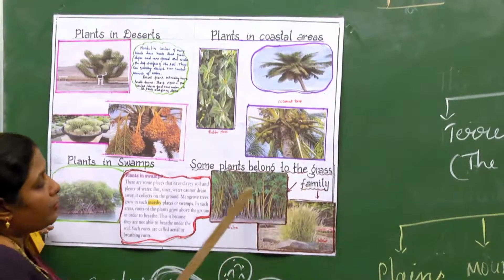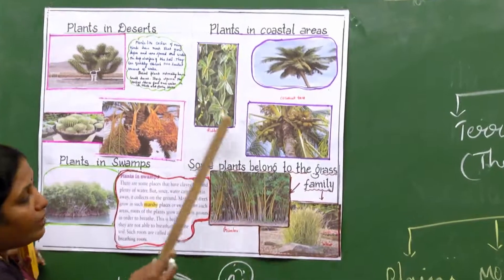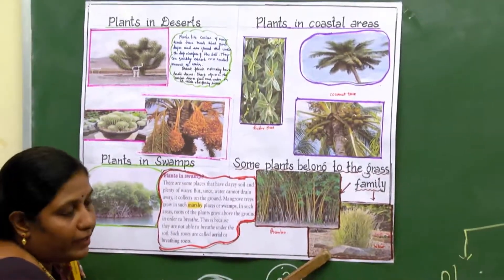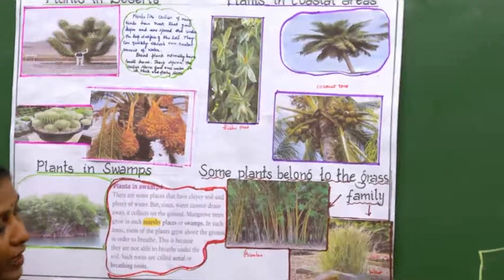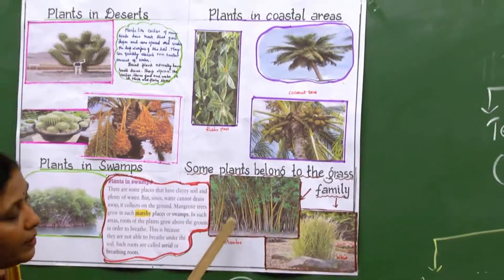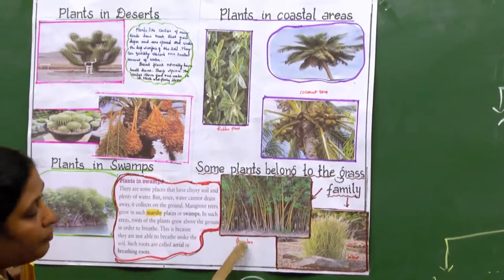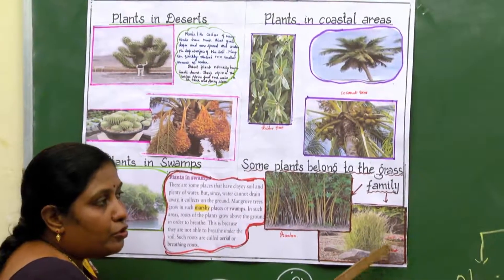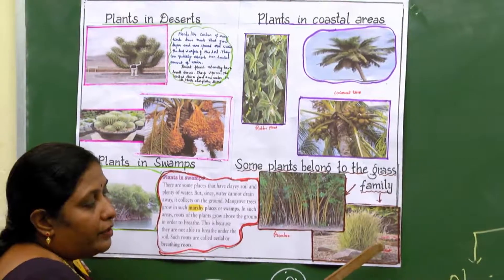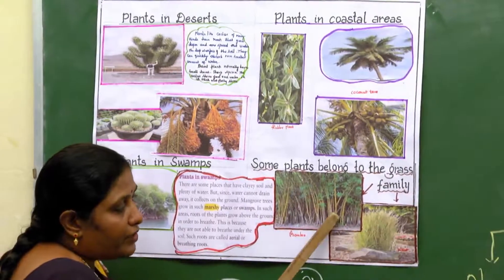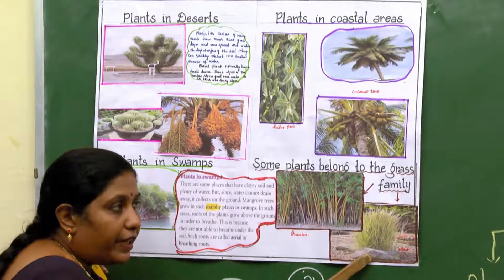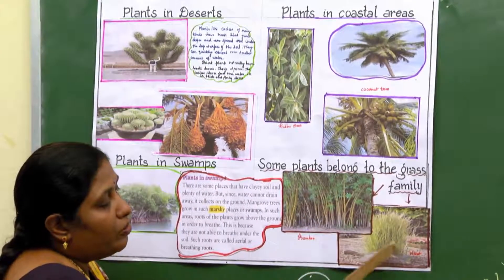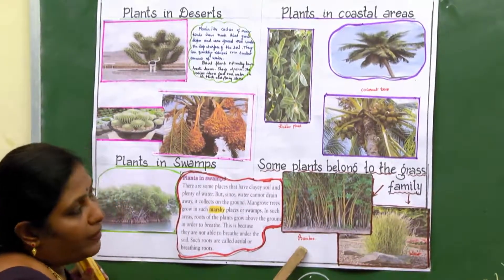There are also plants which belong to the grass family. Very good examples are bamboo, rice, wheat, and sugarcane. They are all in the form of grass and are called the grass family.